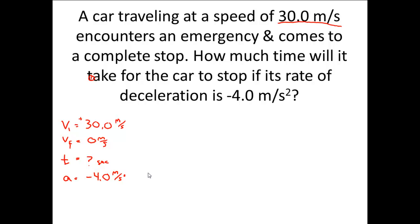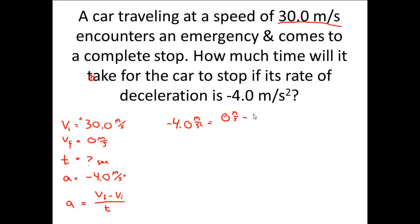All the givens are listed, and the next good idea is to list our equation. The acceleration equation is: acceleration equals the final velocity minus the initial velocity divided by time. So I'm going to rewrite it — negative 4 meters per second squared equals zero meters per second minus 30 meters per second, divided by T, since the time is an unknown.